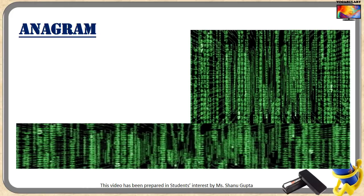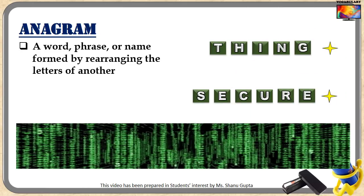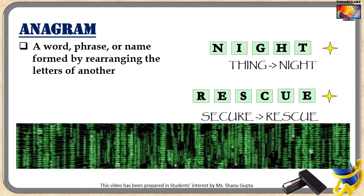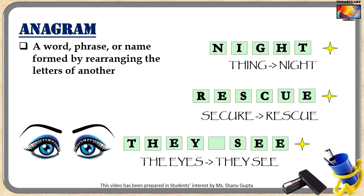Next, we are going to discuss anagrams. An anagram is a word, phrase, or name formed by rearranging the letters of another. For example, the same five letters of the word 'think' can be rearranged into another word: 'night.' Take the word 'secure' — its letters can be rearranged into 'rescue.' Take the phrase 'the eyes' and its letters can be rearranged into 'they see,' which is interesting because the second phrase underlines the purpose of the object in the first. So an anagram is a type of word play in which the letters of a word or phrase are rearranged to create new words and phrases.